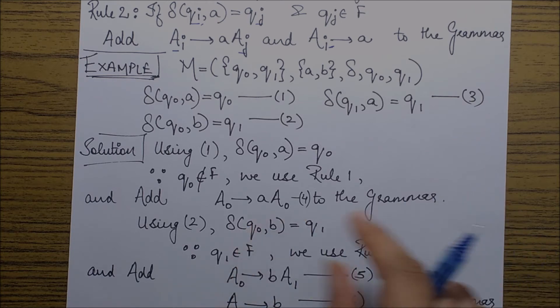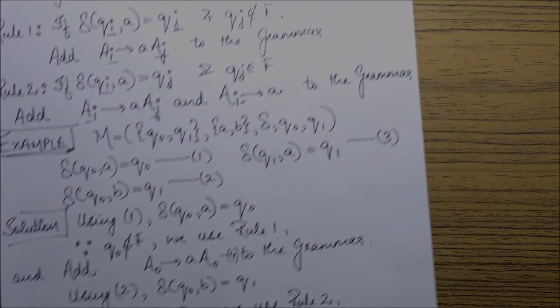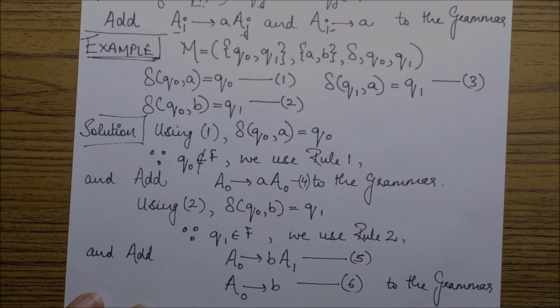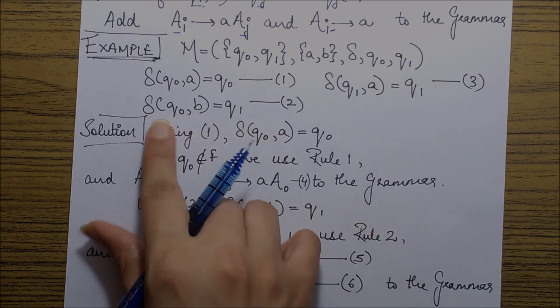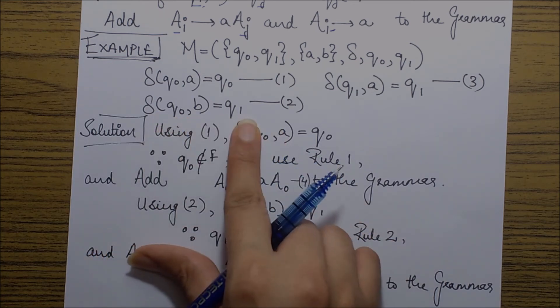So let's move on to the next transition. The next transition is q naught comma b goes to q1, which is q naught on input b goes to state q1.